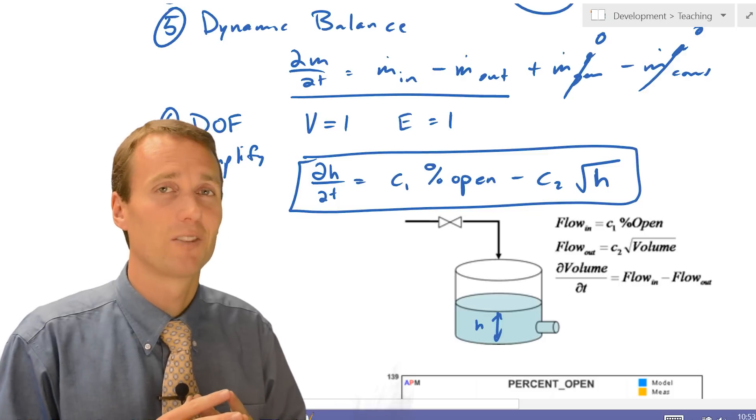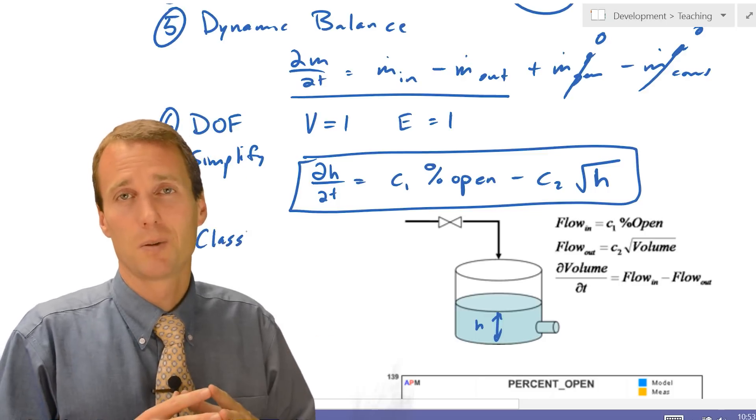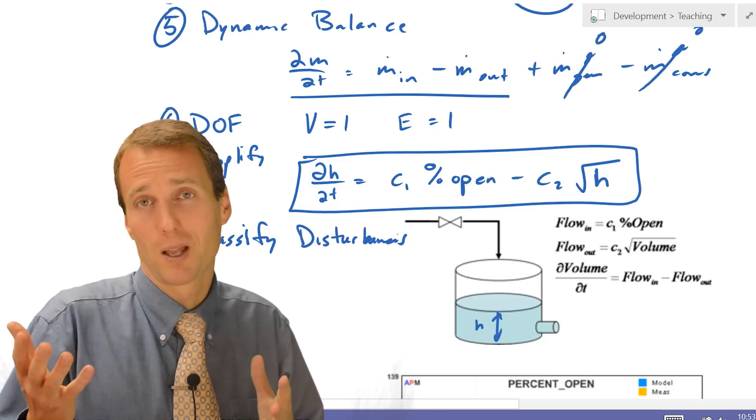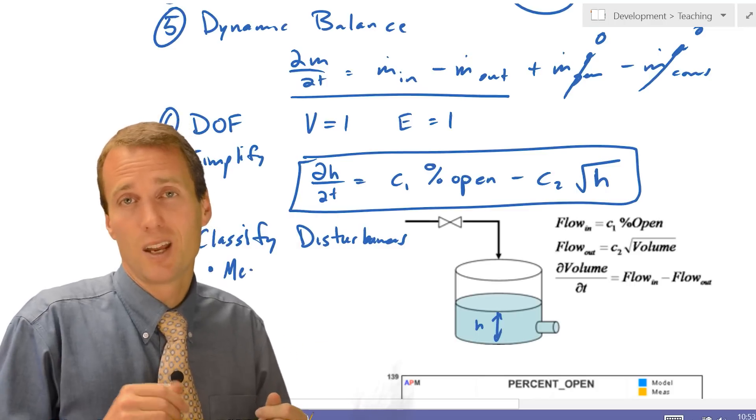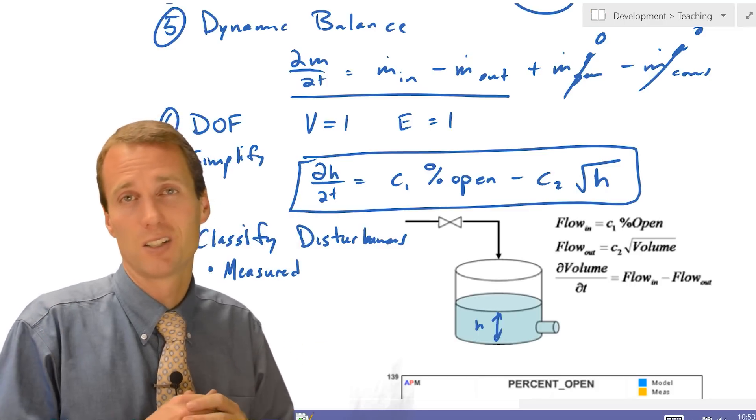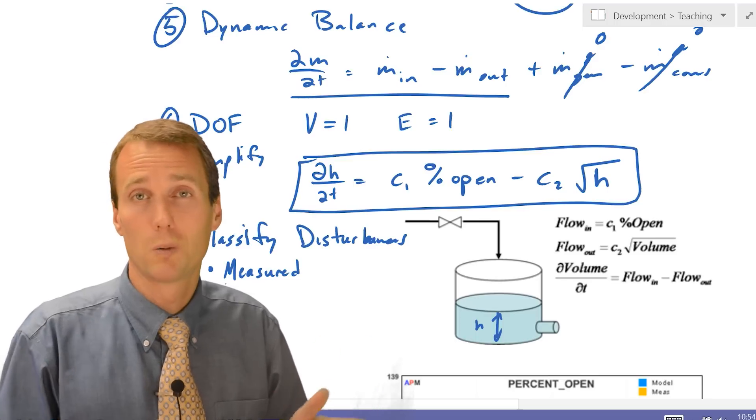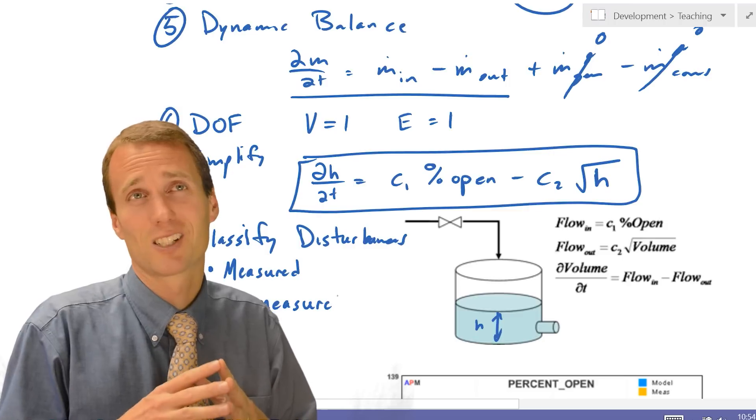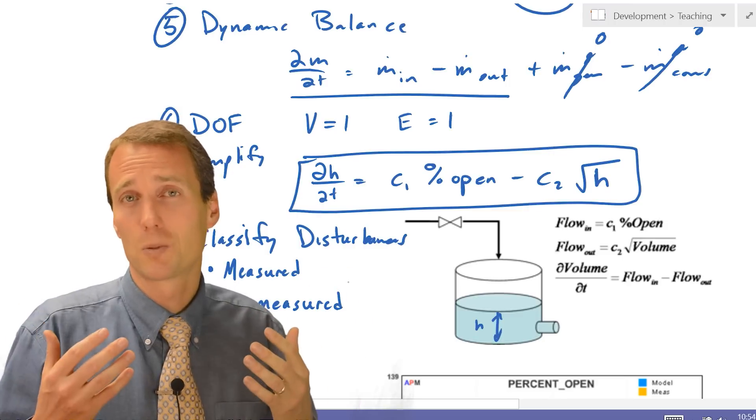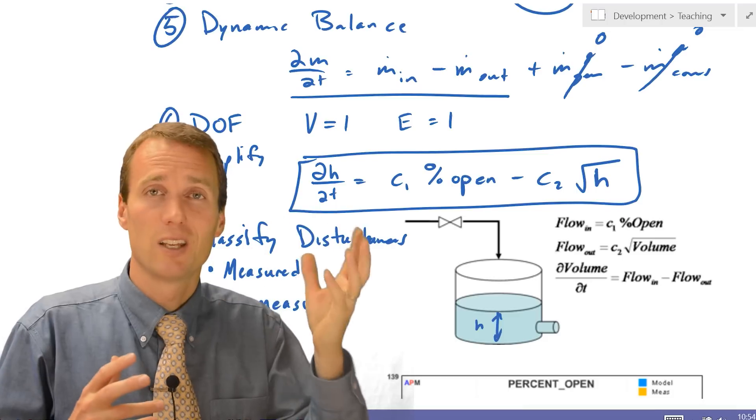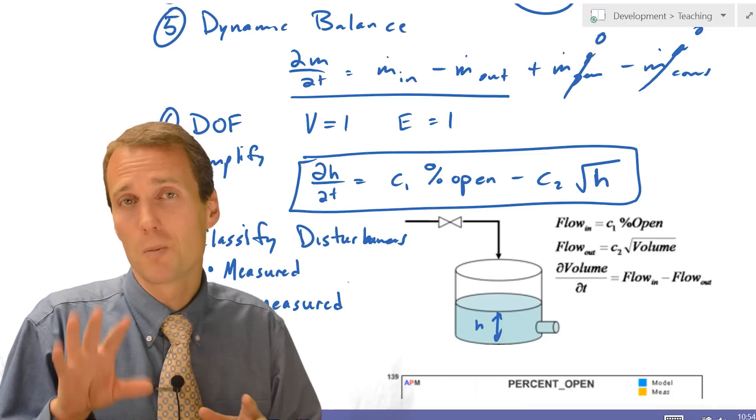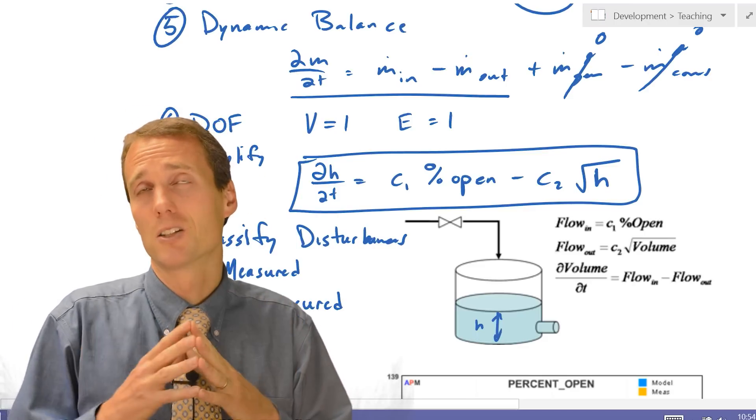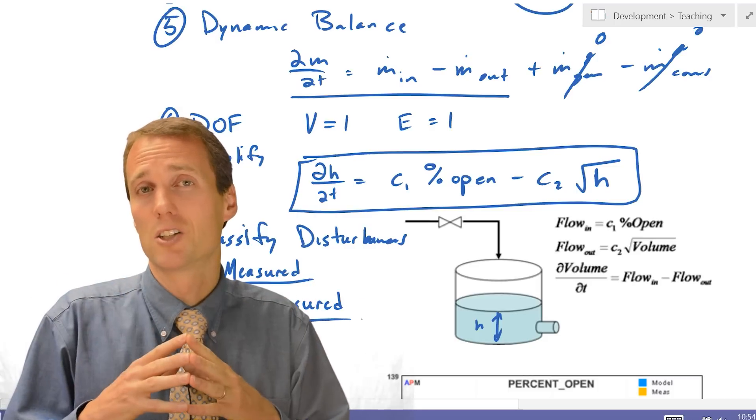The final thing that we can do is go ahead and classify disturbances or other inputs that we have coming into our system. So in this case, you might have the city water supply pressure that changes. That might be a disturbance. And we can maybe install a pressure sensor on that supply line to have a feed forward into our controller. Some disturbances you can measure, and some are unmeasured disturbances. So it's important to classify the different types of disturbances that may be affecting the process, and just classify those as measured or unmeasured disturbances.